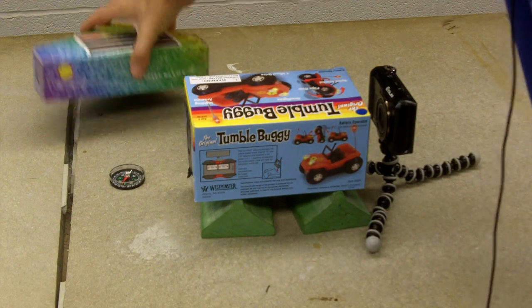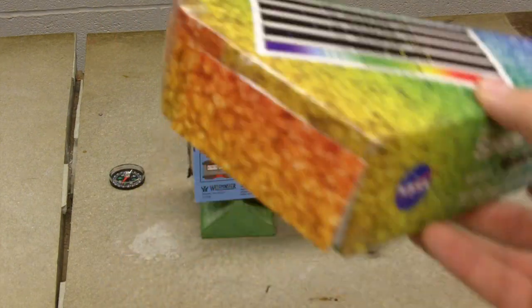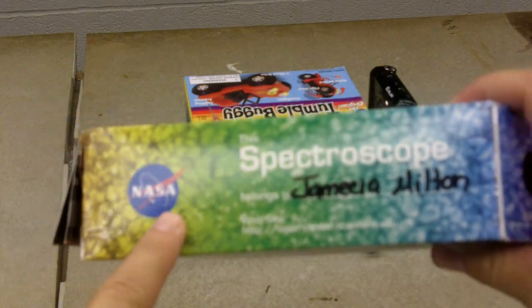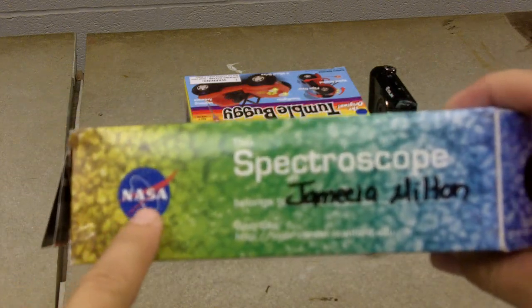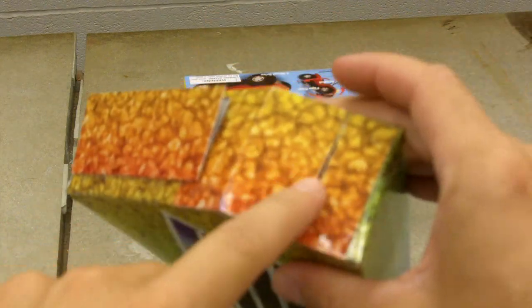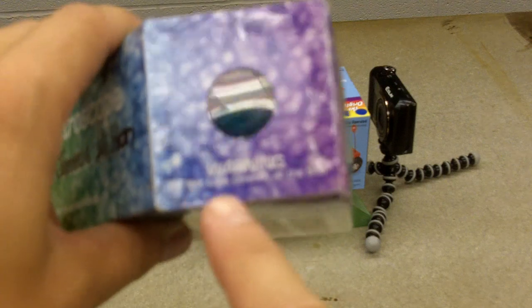I wanted to show you this too. I can't remember where we got these, but this is the same kind of thing. I guess it's from NASA. See, it says right there, NASA. So this is basically the same thing. There's a slit right here, and then there's a diffraction grating right there, and it even says, let's see if I switch that, warning, do not look directly at the sun.